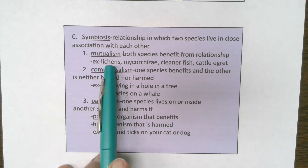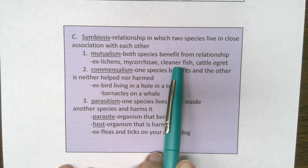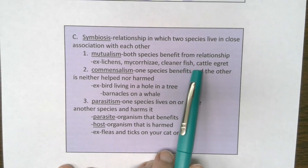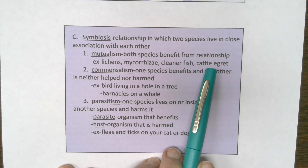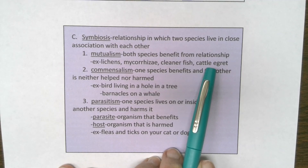Cleaner fish that live in the mouths of larger fish pick off parasites as a food source — the bigger fish's mouth gets cleaned and the smaller fish gets a meal. Cattle egrets are similar: they live on the backs of cattle, eat insects that bother the cows, get a nice meal, and the cow has fewer flies bothering it. There are lots of great examples of mutualism in nature.